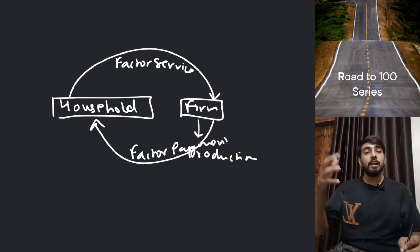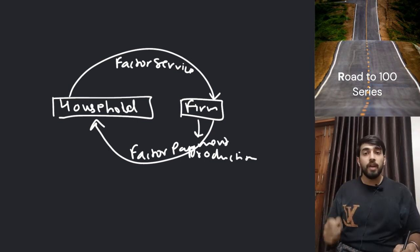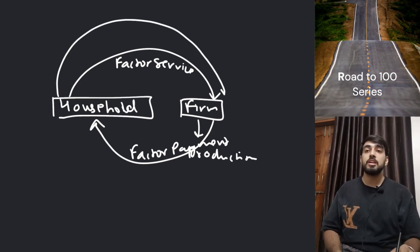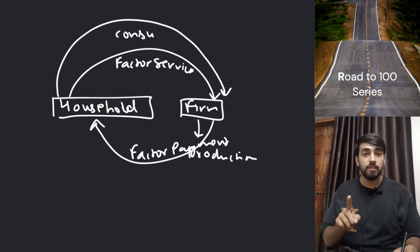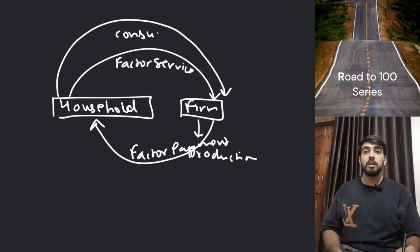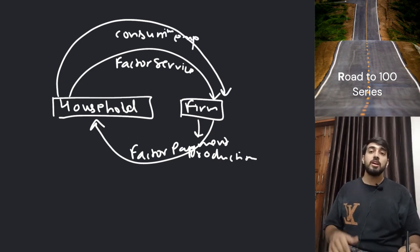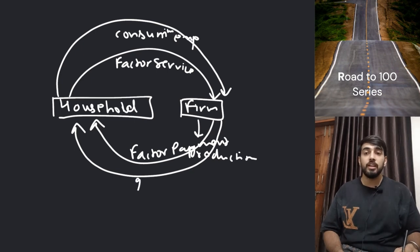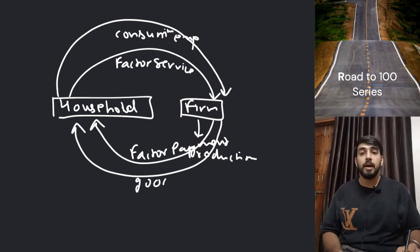The firm gives factor payments to them. Now these factor payments that household receives — household uses all of it in consumption expenditure. We talked about an assumption which is there are no savings in the economy, so the entire amount is spent on consumption expenditure. And if household is spending on consumption expenditure, then the firm has to give them goods and services, which they produced in the production phase.